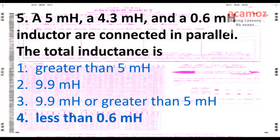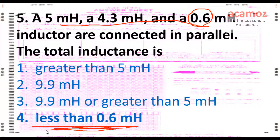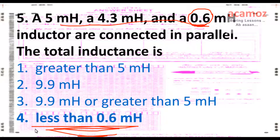If 5 mH, 4.3 mH, and 0.6 mH inductors are connected in parallel, the total inductance is less than 0.6 mH. When inductances are connected in parallel, the total is always less than the least inductance in the circuit — just as equivalent resistance in parallel is always less than the least resistance. So the answer is less than 0.6 mH.